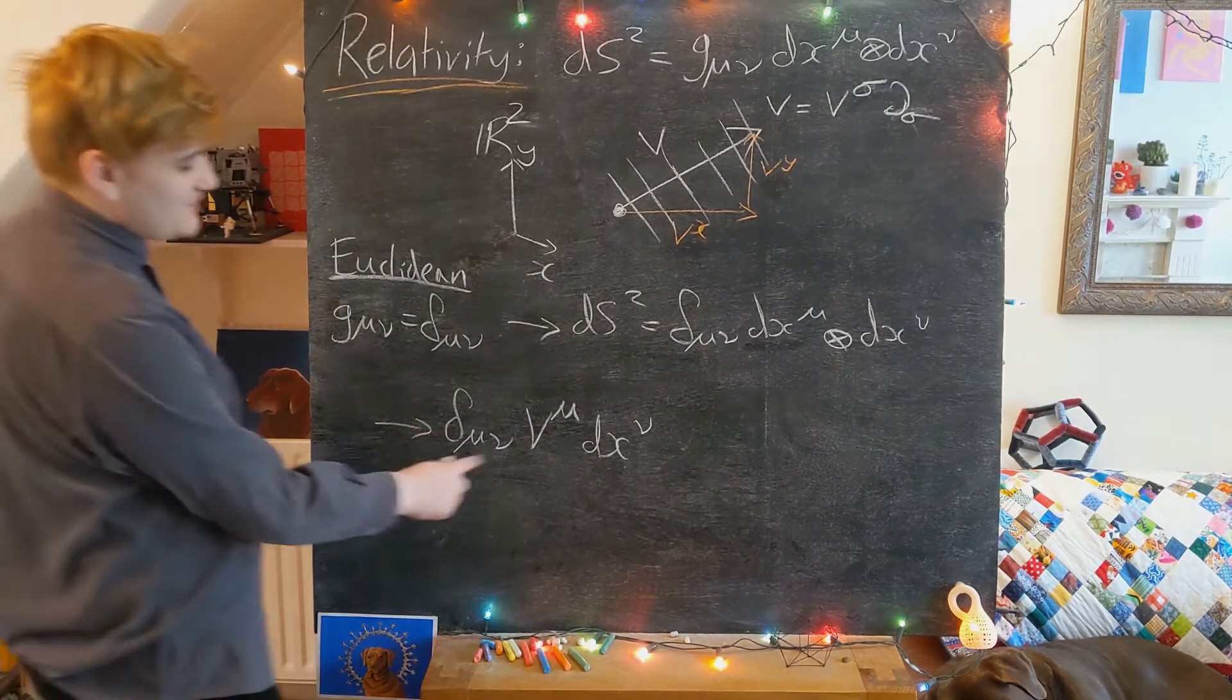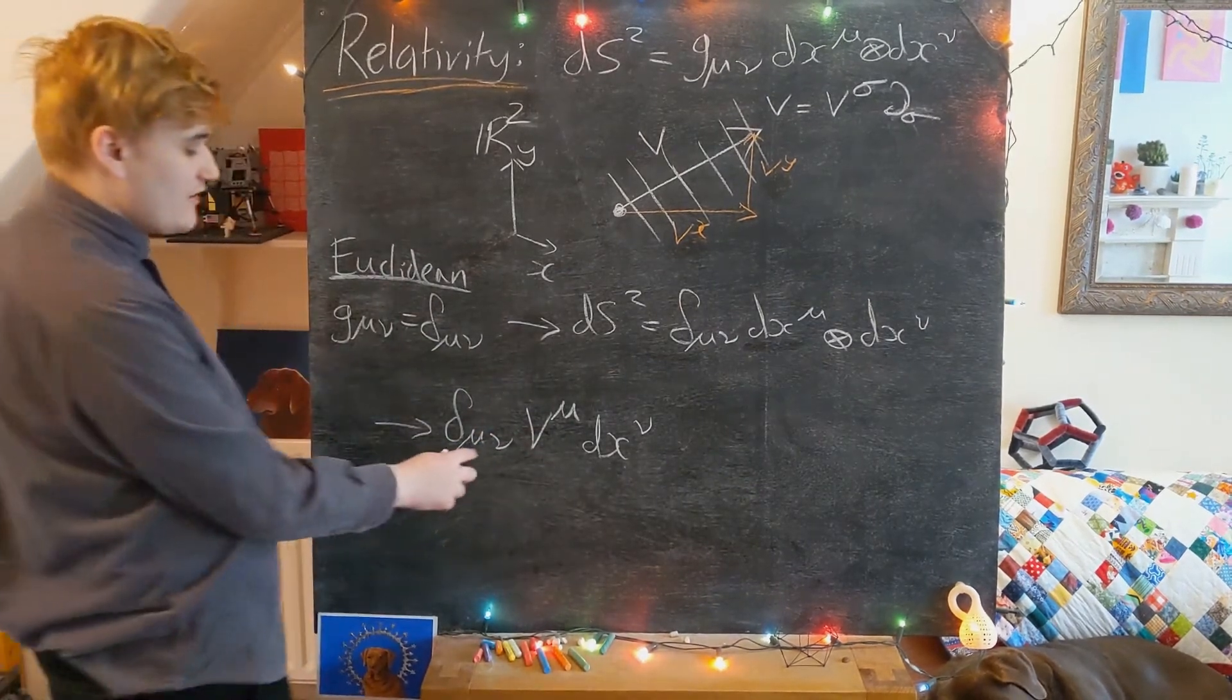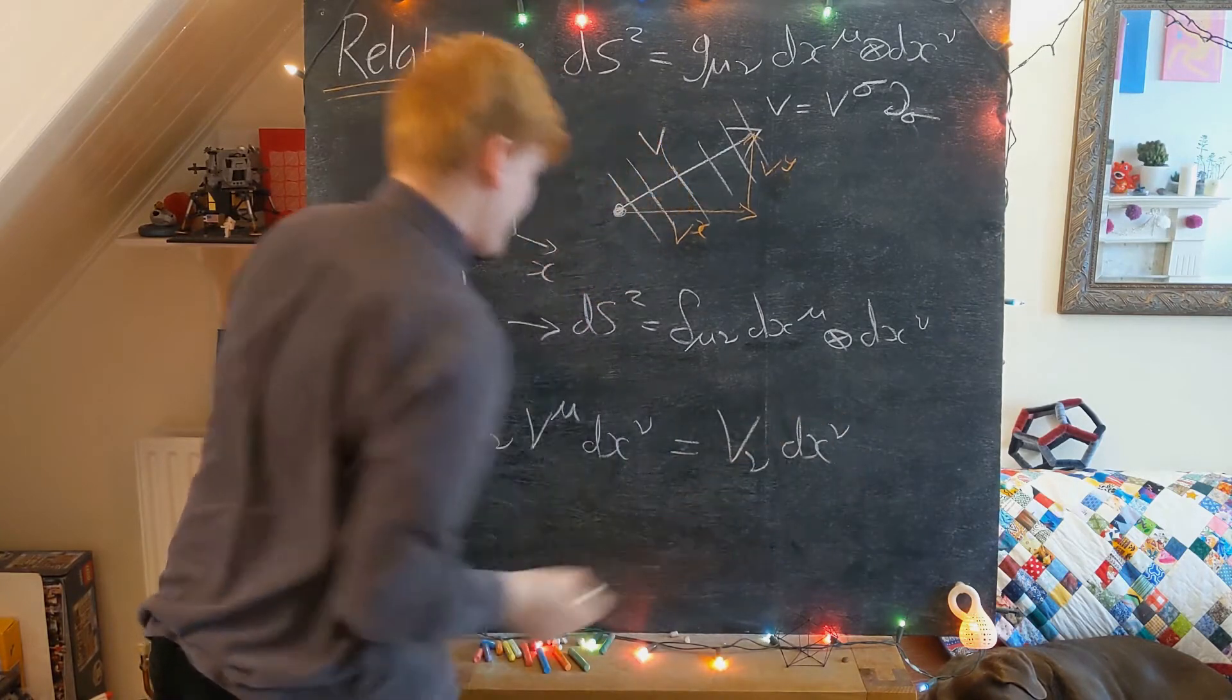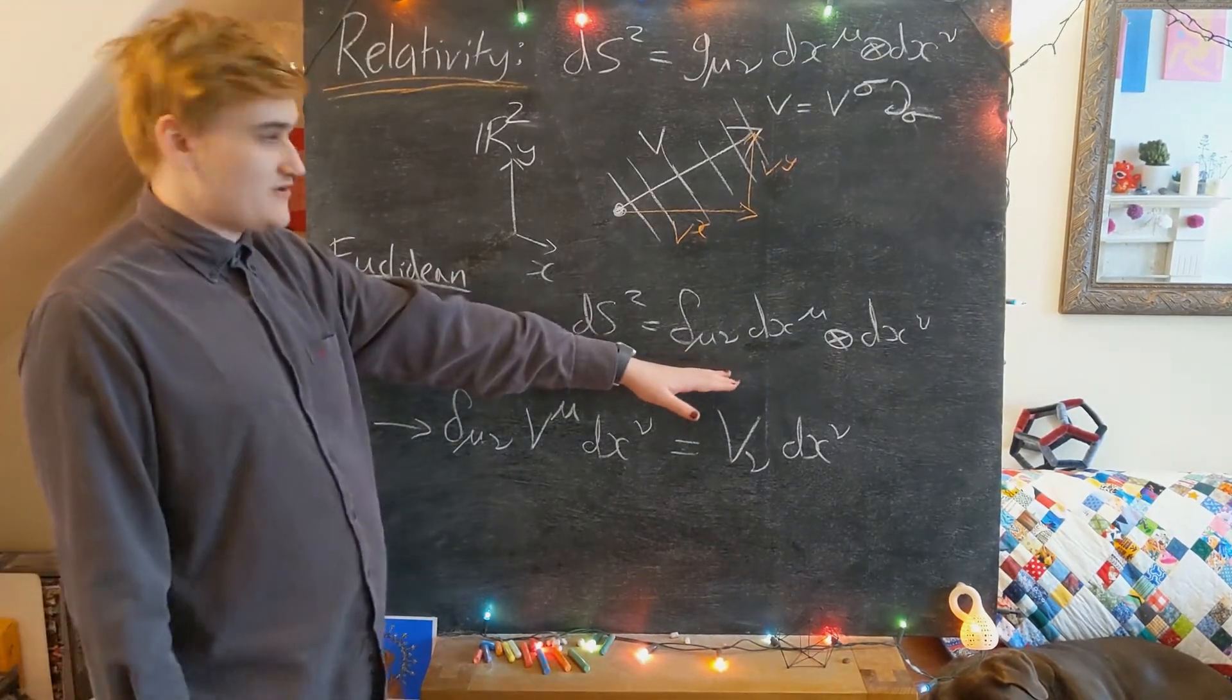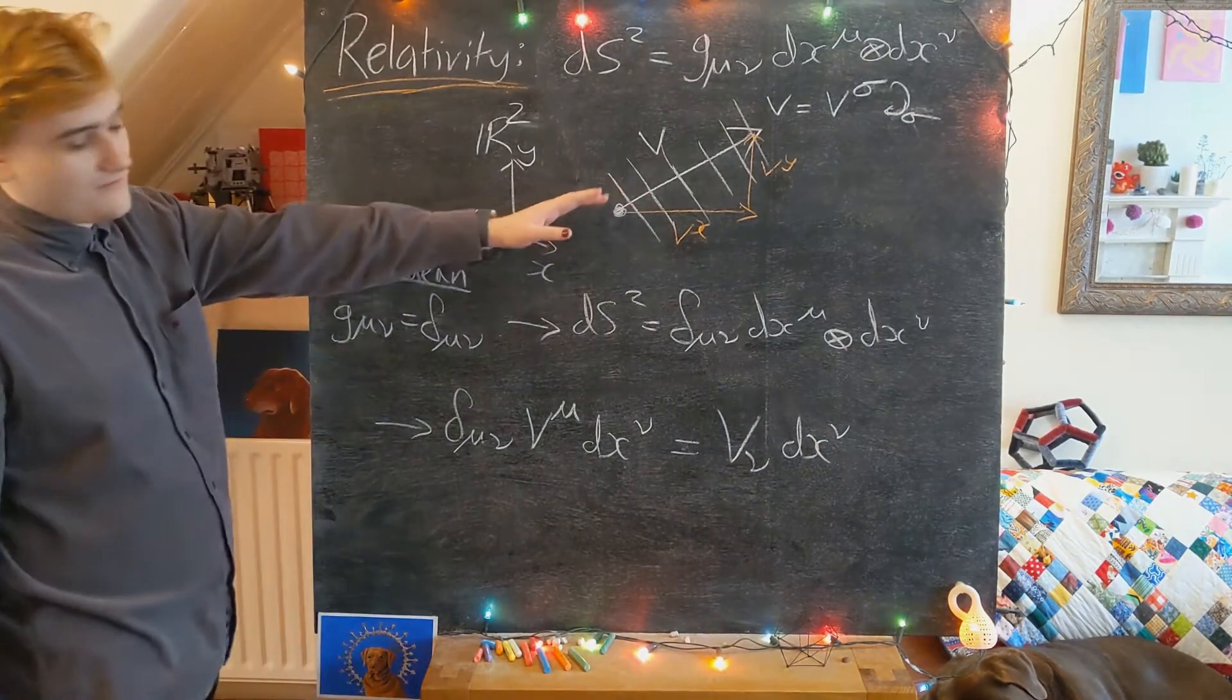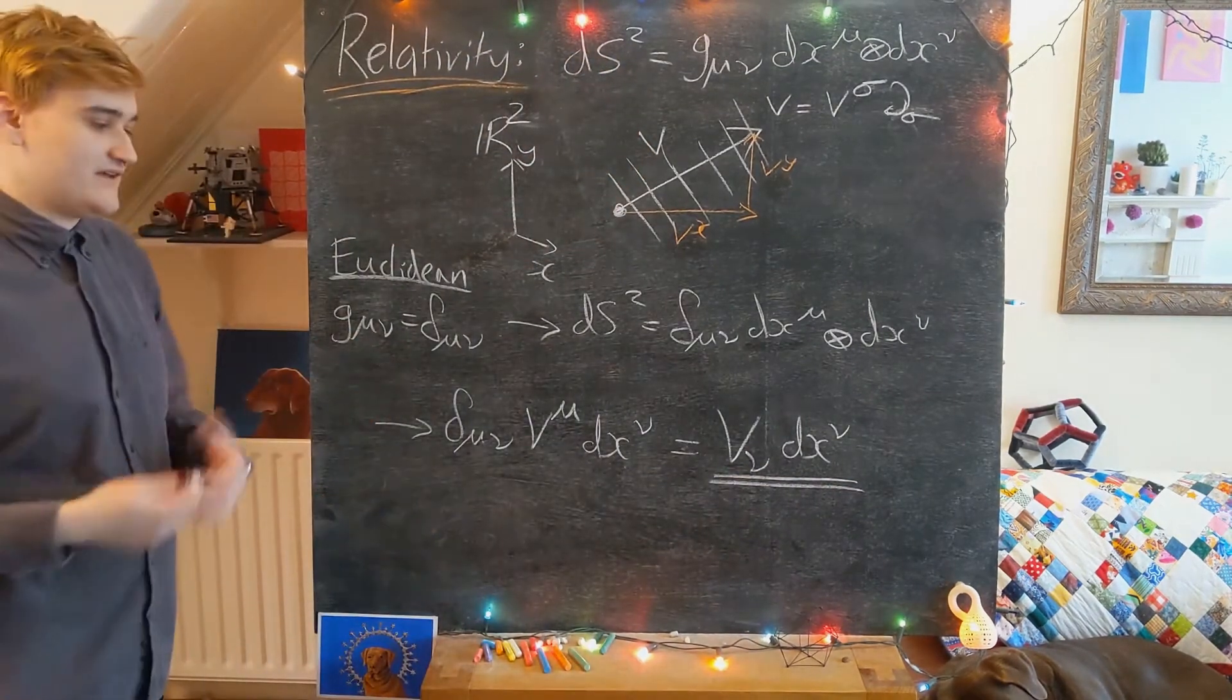And now we can simply just realize, okay, well essentially this other delta that we've got here can be used to contract this μ index, and it's going to leave us with a single lower μ index. And now this whole thing just becomes V_μ dx^μ. So being absolutely clear on what we just did, we're taking our Euclidean metric, we're trying to use it to calculate the length of this vector. We've done half of the calculation - we've plugged in one copy of the vector into the metric. It's got us through to here, essentially just turning that vector into its corresponding one-form.